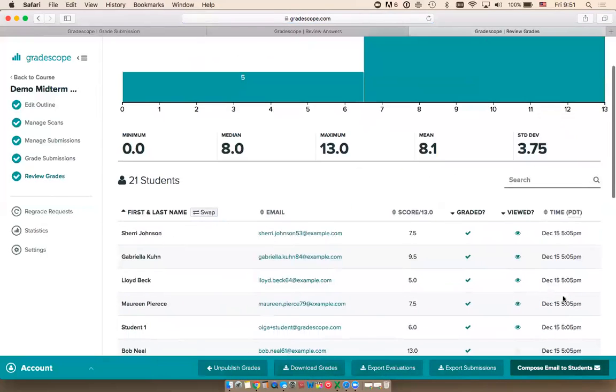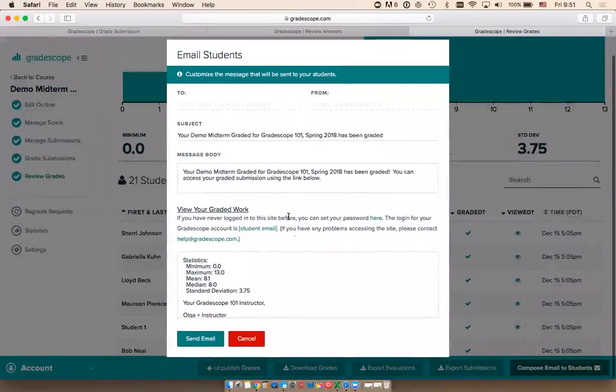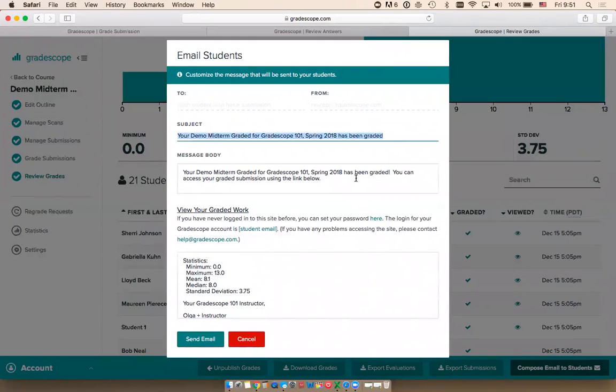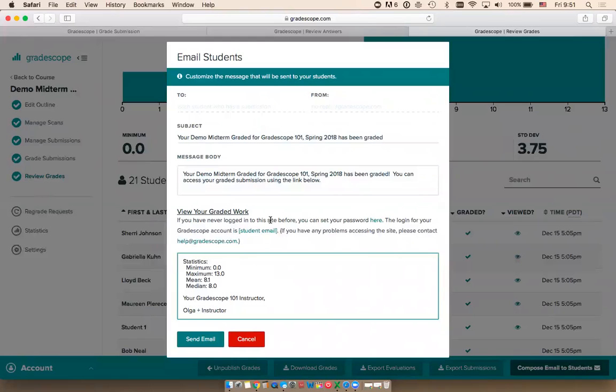Then you can publish the grades to students so they can view their grades and submissions online. When I click Publish Grades, I get an option to notify my students over email. I'm going to compose email to students. Here I can edit the subject line and body. By default, students see some basic statistics. I can delete or add anything I want here. If students have never logged into Gradescope before, they'll get an emailed link to set a password. If they have, they'll just get an emailed link to access the assignment.